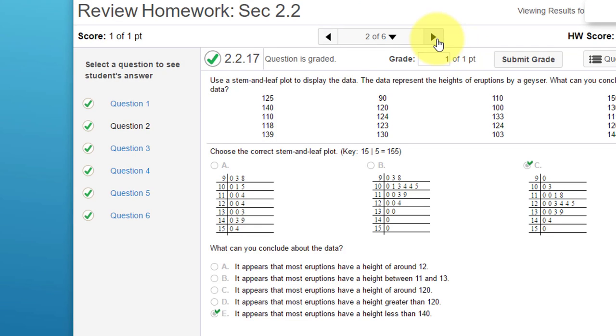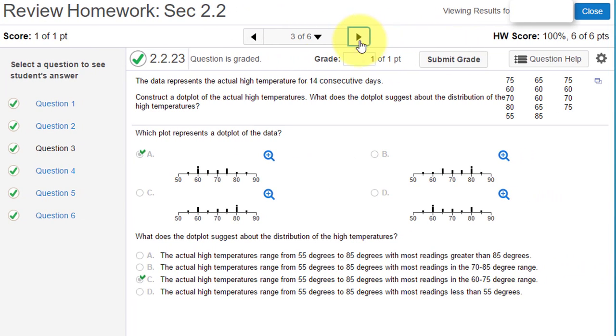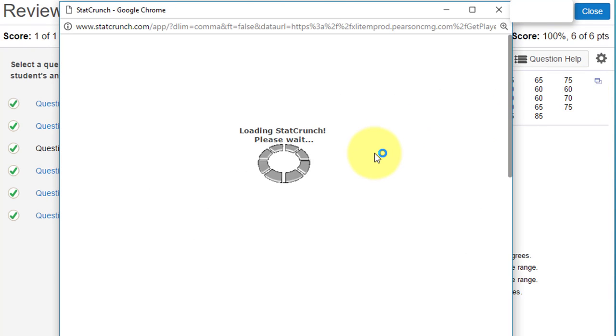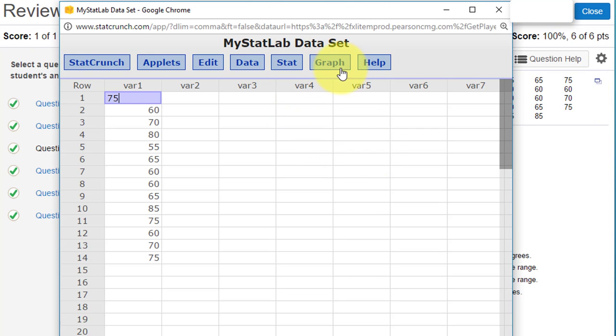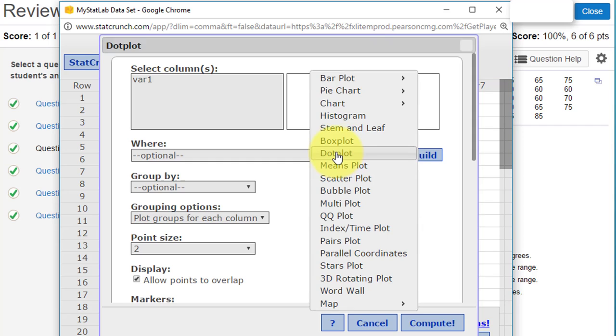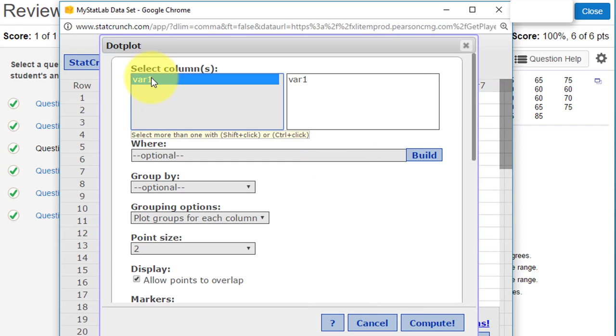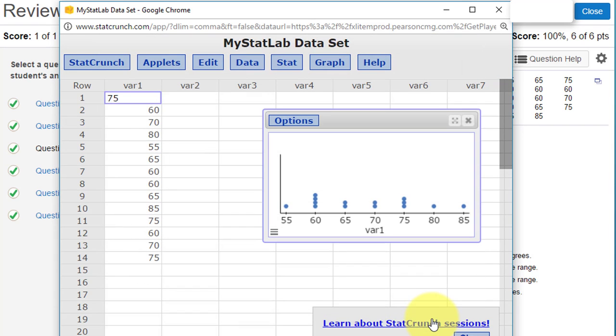Let's move on. The next one says we need to create a dot plot. Again, we're given data, so we just click on Open in StatCrunch. The data's there. We go to Graph, look for Dot Plot, select that variable, and click Compute.